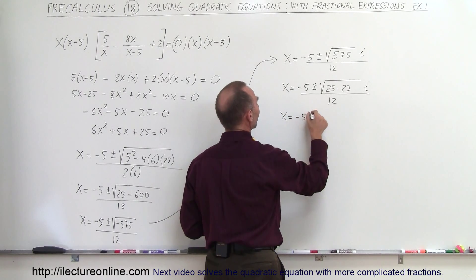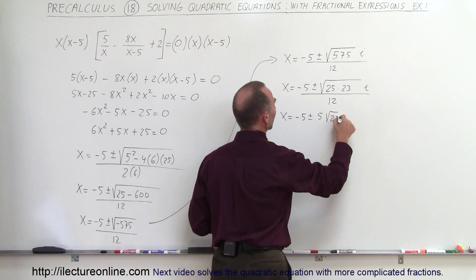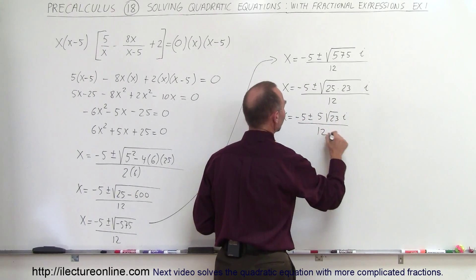So x is equal to minus 5 plus or minus 5 times the square root of 23, i, the whole thing, divided by 12.